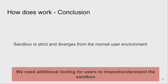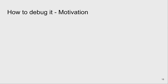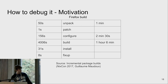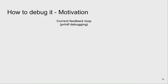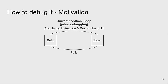You'll see things working on your own system that might not work in a build sandbox, and this is where problems sometimes arise. We should provide additional tooling for users to inspect and understand the build sandbox better. For example, with large packages like Firefox that take a long time to build, the current feedback loop when a build fails is: build fails, user has to fix it, add debug instructions, restart the build — and do that several times. Can we do better?